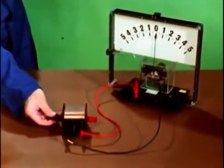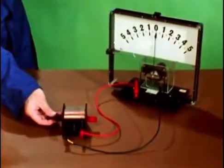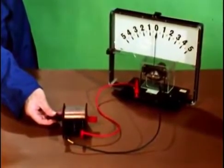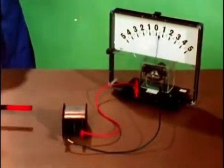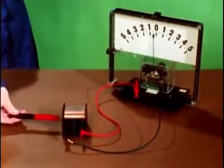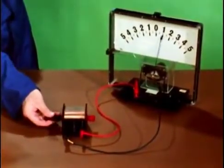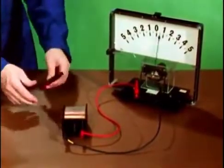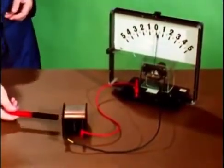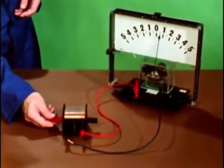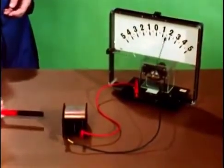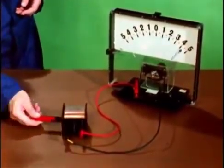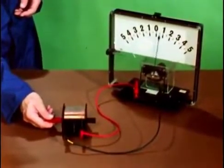There was a kick of current as the magnet went in, and there'll be another in the opposite direction as we pull it out again. There. Whenever the lines of force of the magnet cut across the turns of the coil, an EMF, an electromotive force, is induced in the coil causing a current first one way and then the other. And this is true whenever the number of lines of force passing through a coil change for whatever reason.